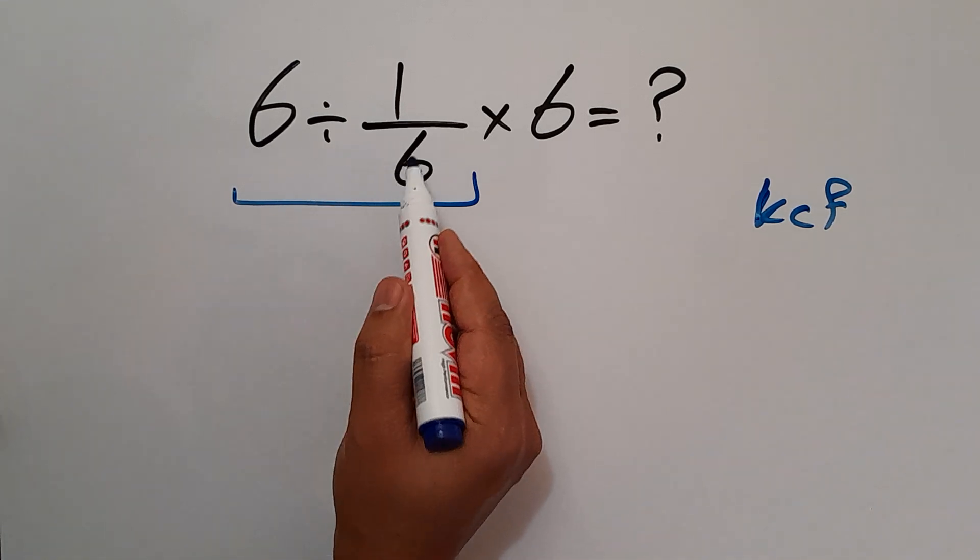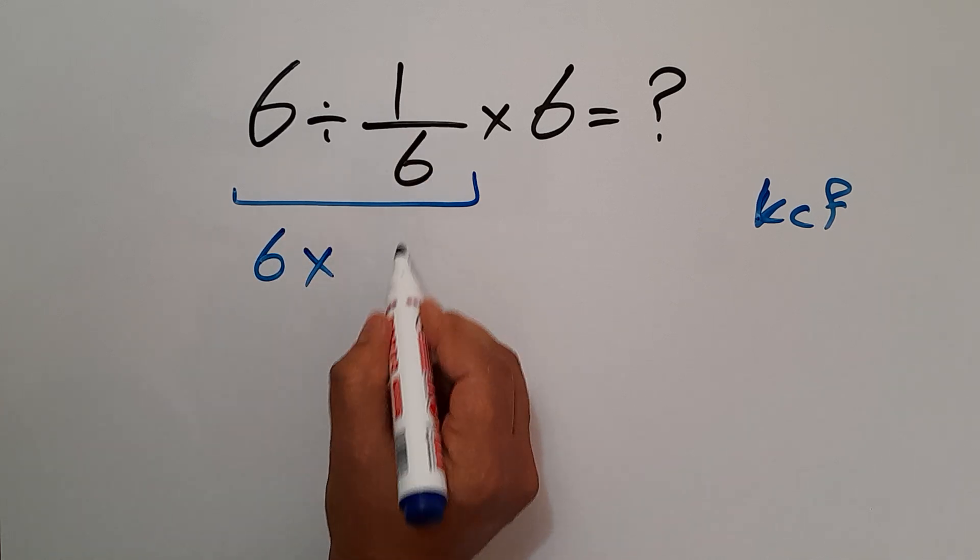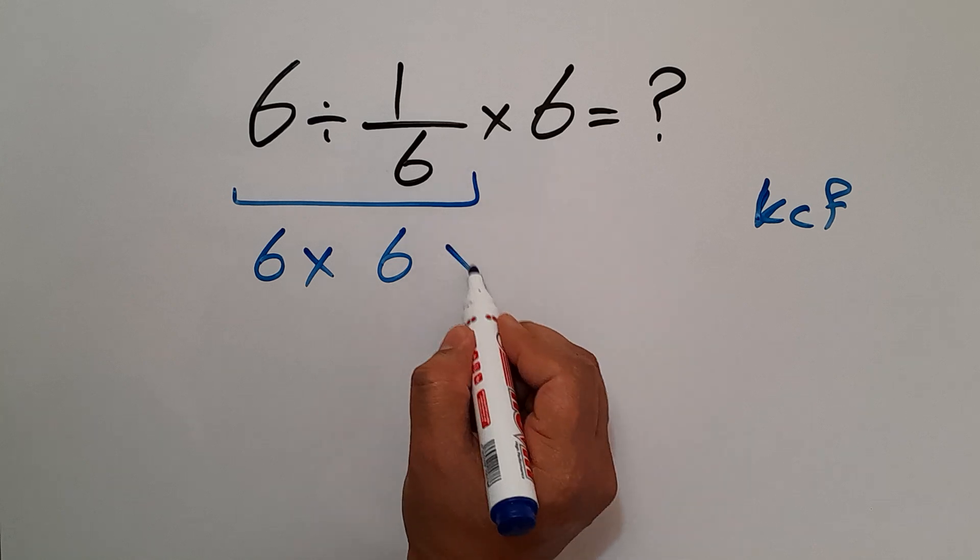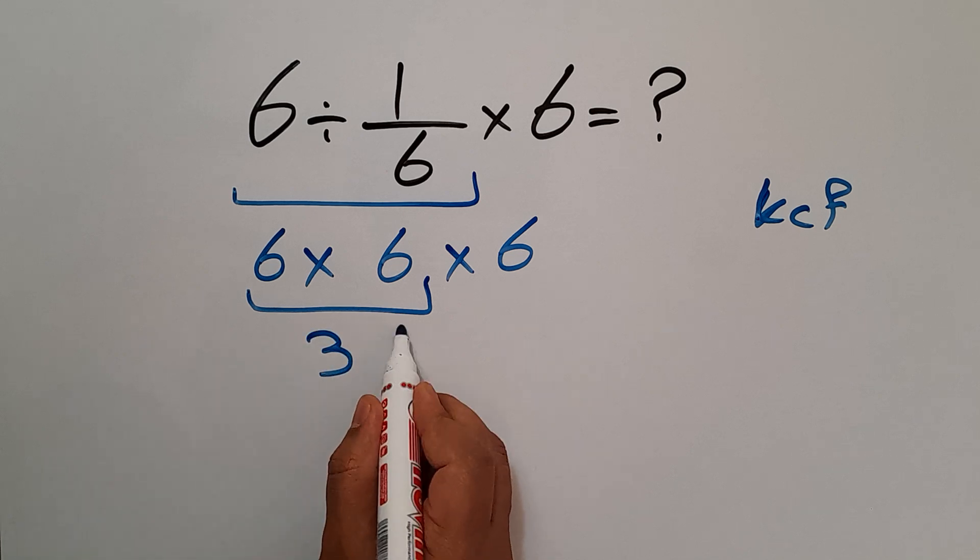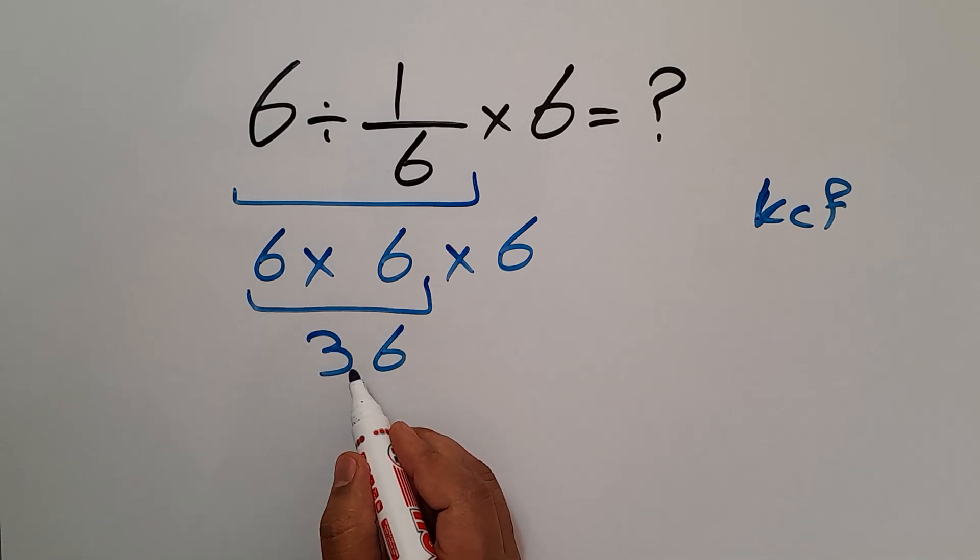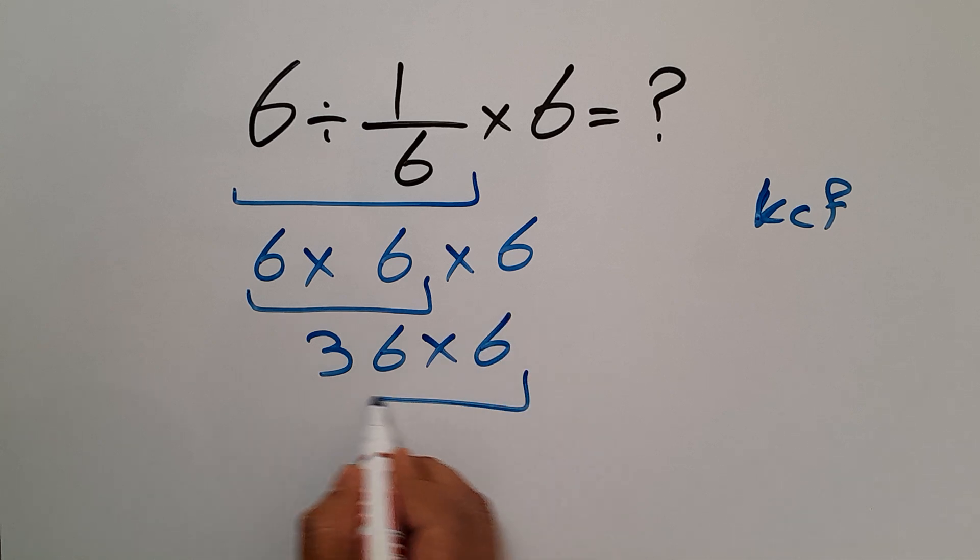We can write 6 times 6 and again times 6. 6 times 6 gives us 36, so we have 36 times 6.